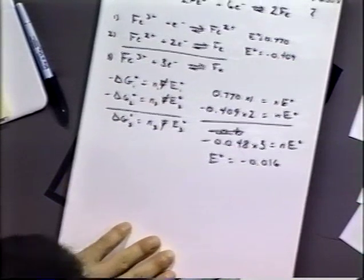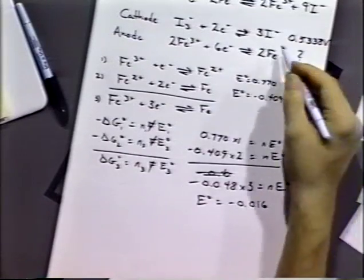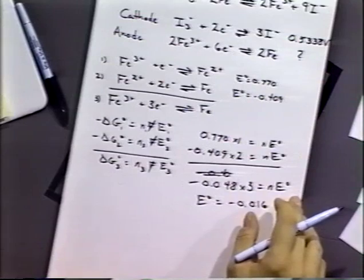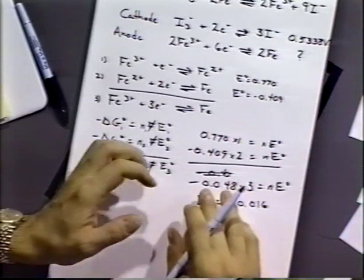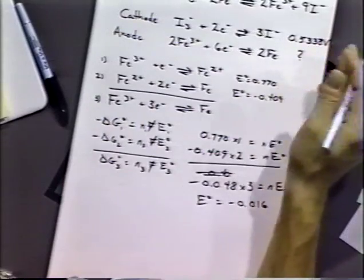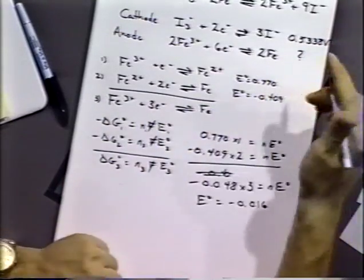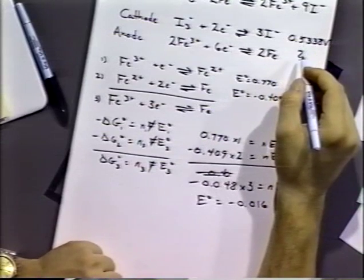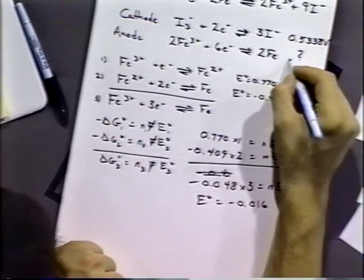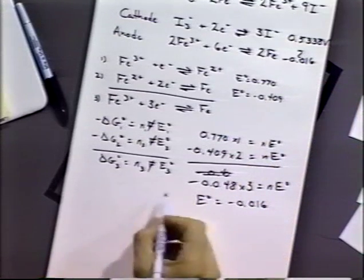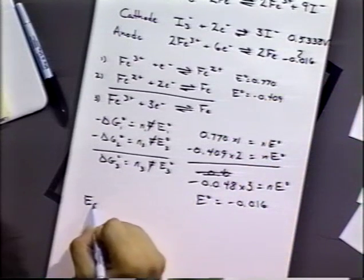We don't normally have to worry about that when we're adding the free energies because we always make it so the number of electrons are the same for the cathode reaction and the anode reaction. And so it cancels out all the time. But that's the only reason we don't have to do it that way. And so we would just put in our number here, minus 0.016.